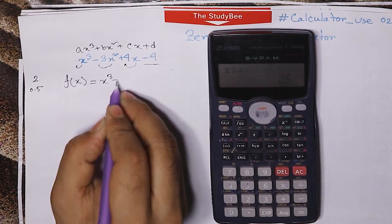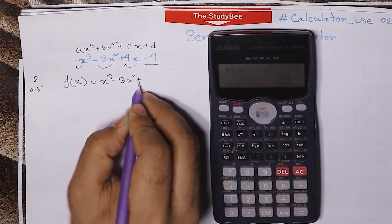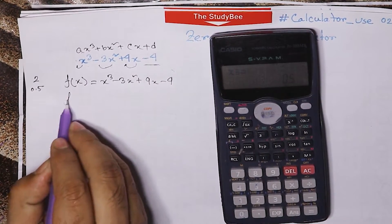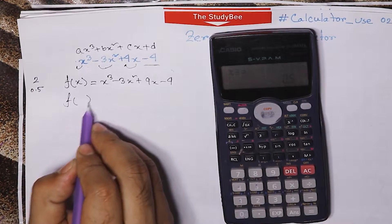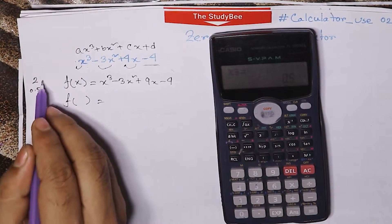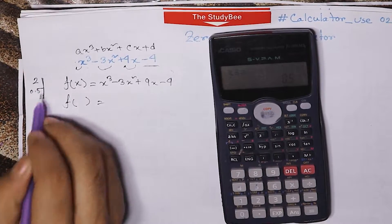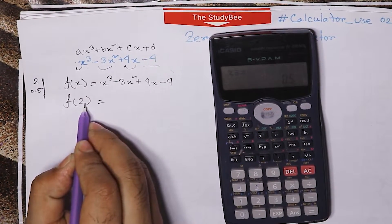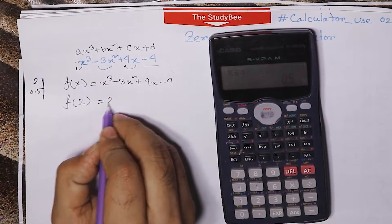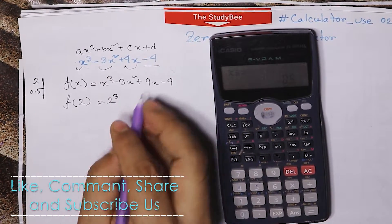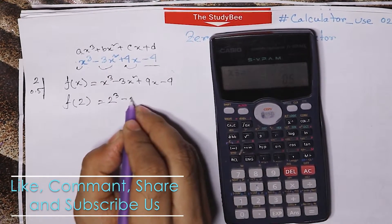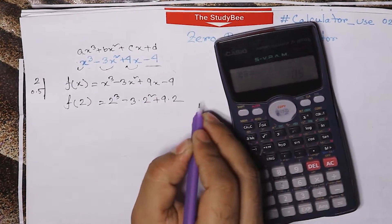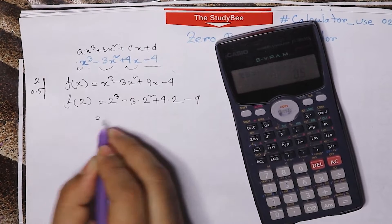x cube minus 3x square plus 4x minus 4. If we have f of x, it is known to be equal to 0. So we have to know this, and this one is known to be equal to 0.